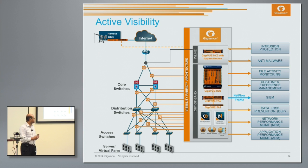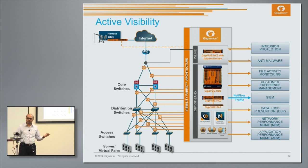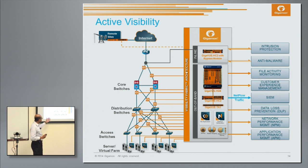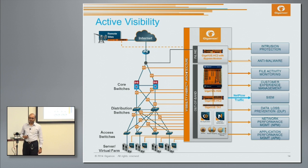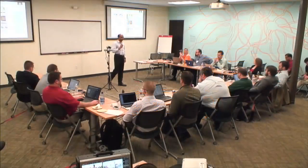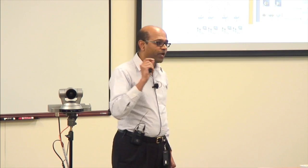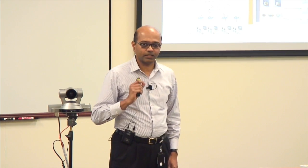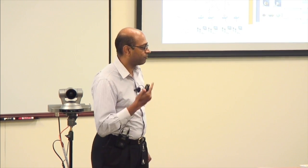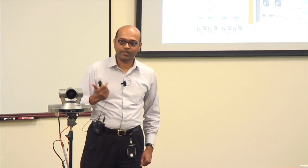Those are situations where you feed into the same visibility fabric and have the ability to do operations in band. Last but not least — and this is very important — this is not just about physical infrastructure. More and more traffic is becoming east-west, especially in highly virtualized environments, which means you should have the ability to capture traffic from virtual servers and virtual machines as well, and feed that into the same visibility fabric. The point here is simple: we're talking about pervasive visibility — I don't care where you want to get the traffic from, on-prem or off-prem, physical or virtual.